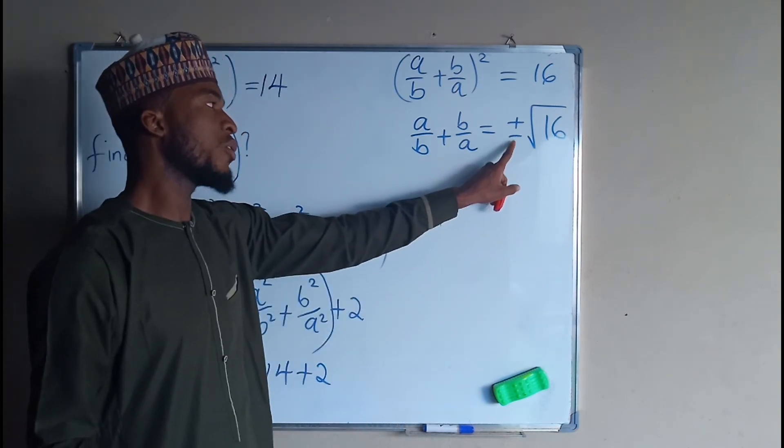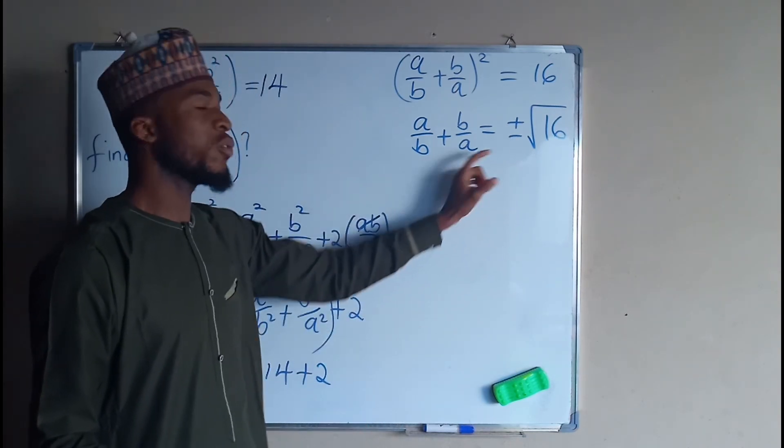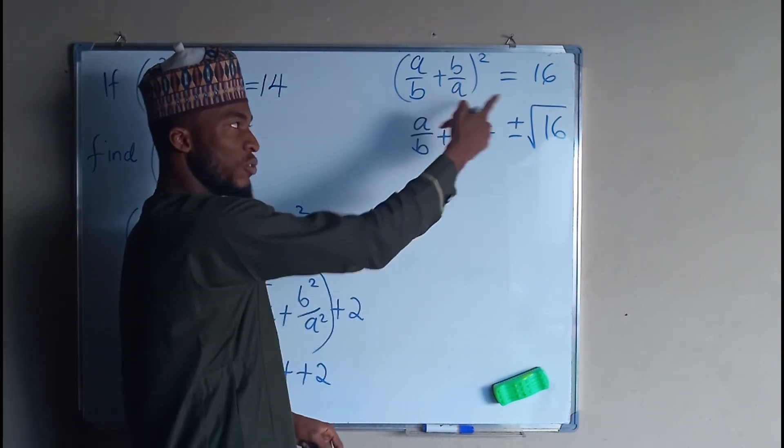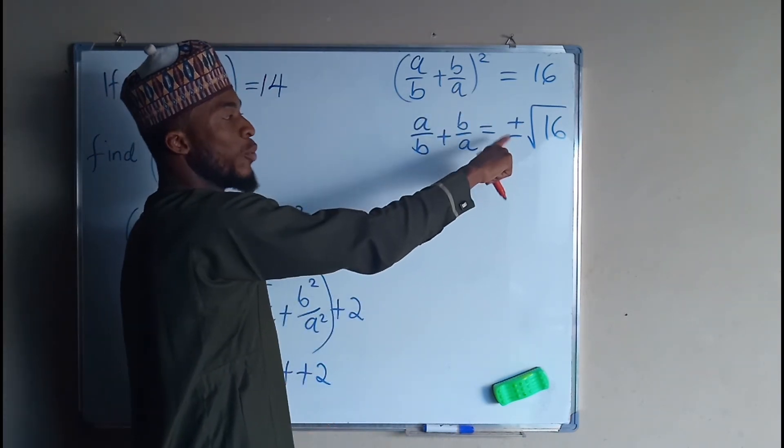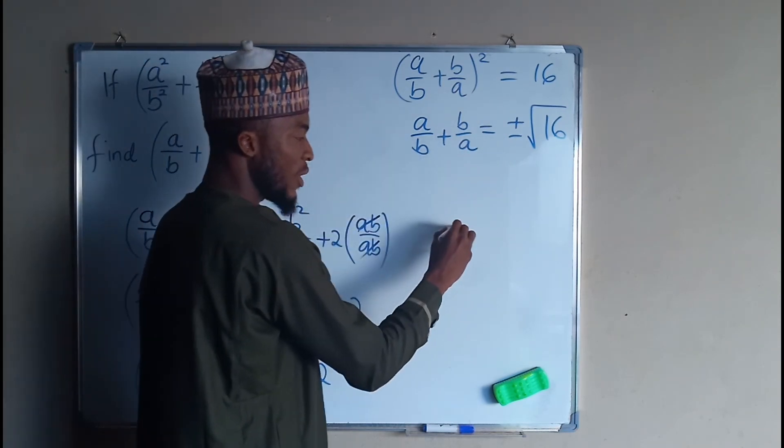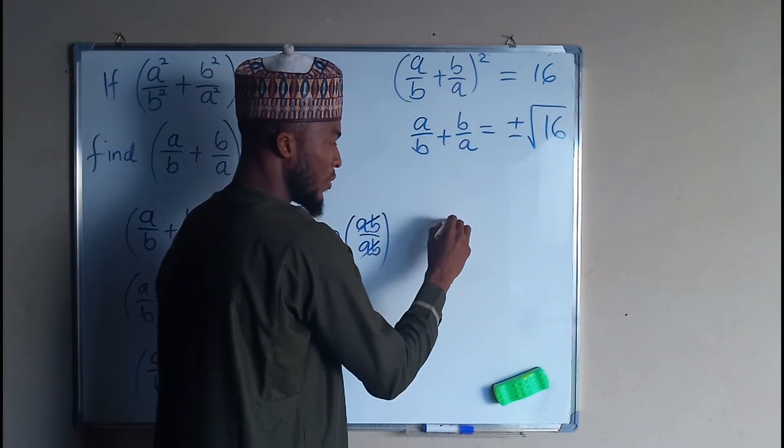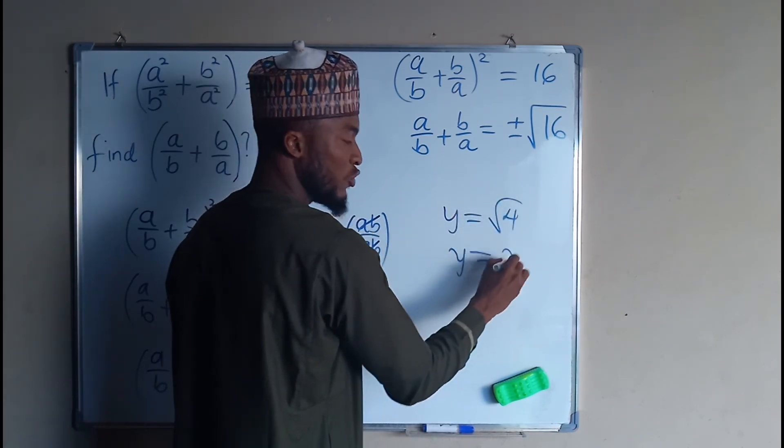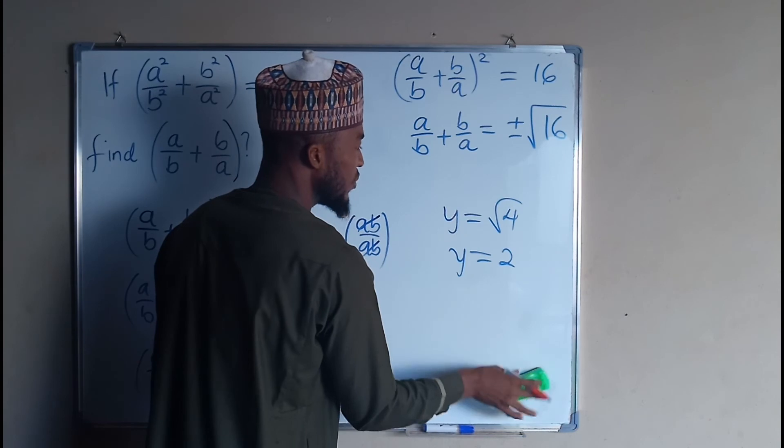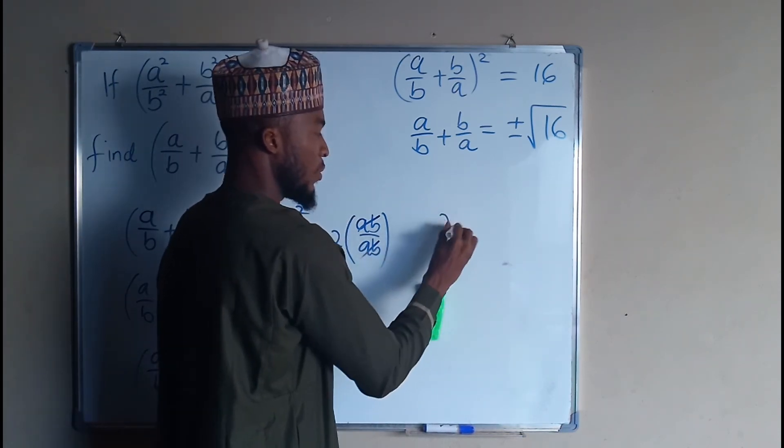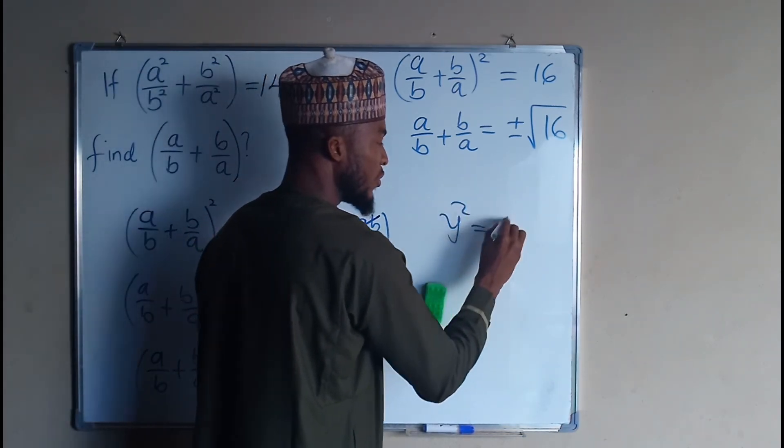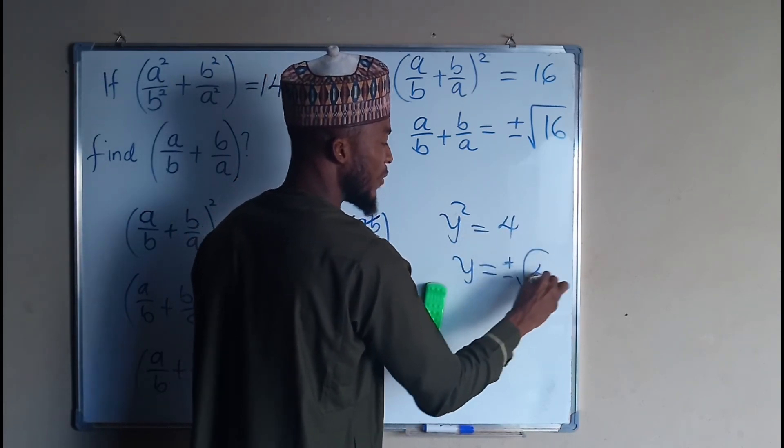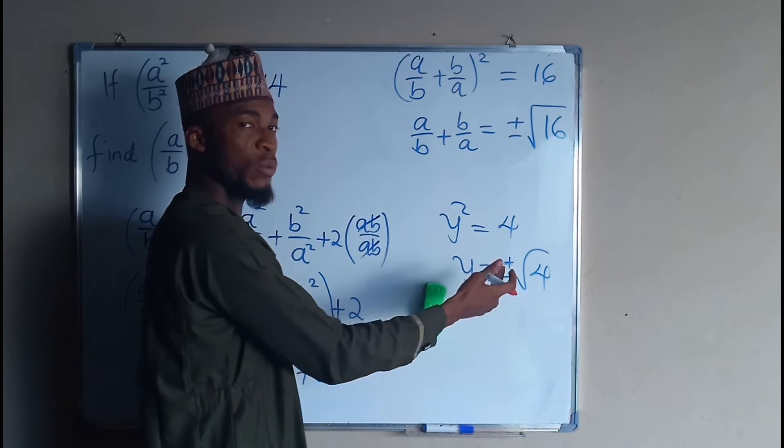The reason we have plus or minus here is because we introduced the square root. The square root was not there before, so we have to add plus or minus. For example, if you have y equals square root of 4, y is just equal to 2. But if you have y² equals 4, then y would be plus or minus square root of 4, because you introduced the square root later on.